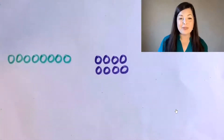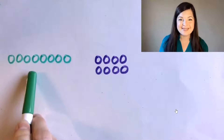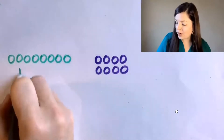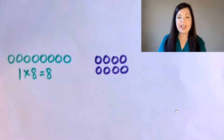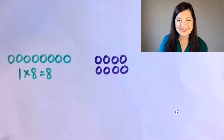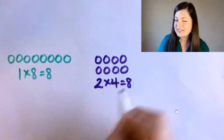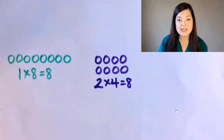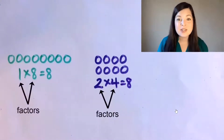Let's start with something we already know. Look at these two arrays. What multiplication sentence matches this array? One times eight equals eight. And what multiplication sentence matches this array? Two times four equals eight. So both of these arrays show a product of eight, and one, eight, two, and four are factors of eight.